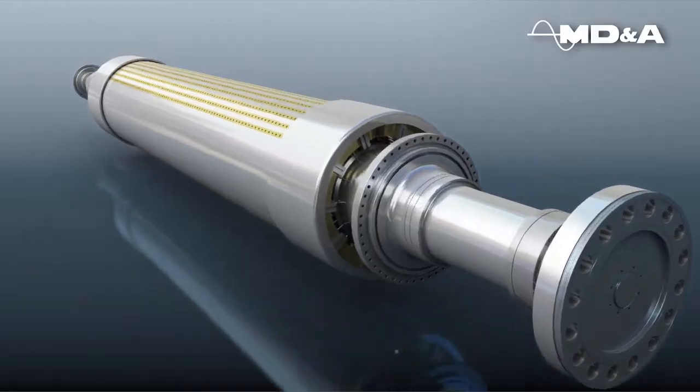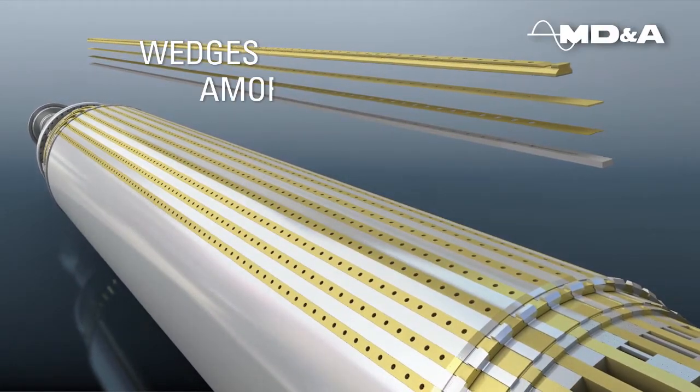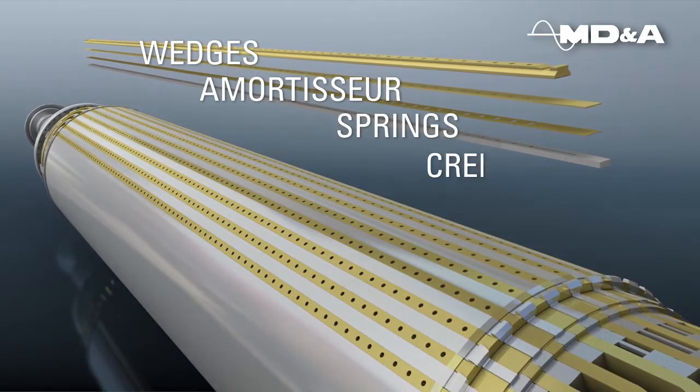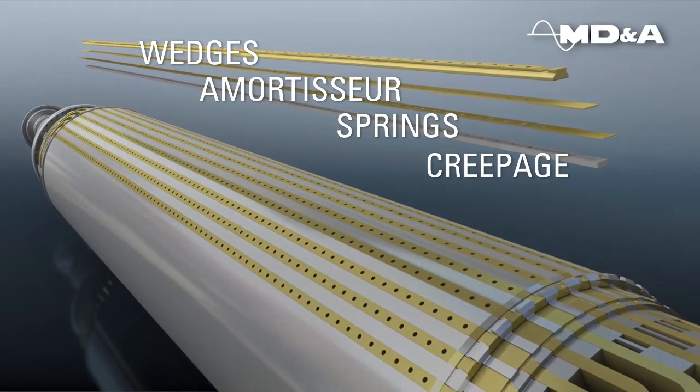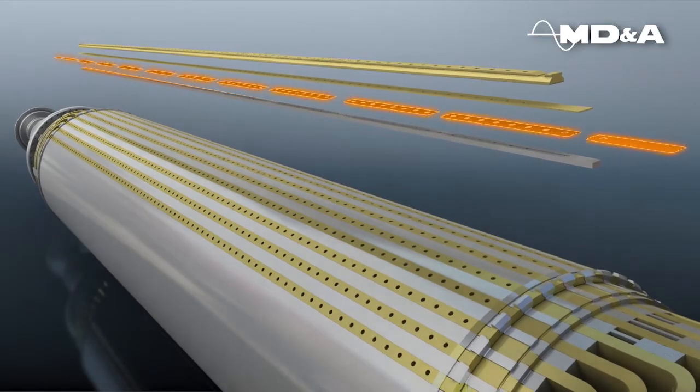This rendering of the original design of the 7-FH2 generator field shows the wedges, an amortiser, and springs over the creepage assembly. As designed, the multiple spring configuration may lead to problematic axial migration.